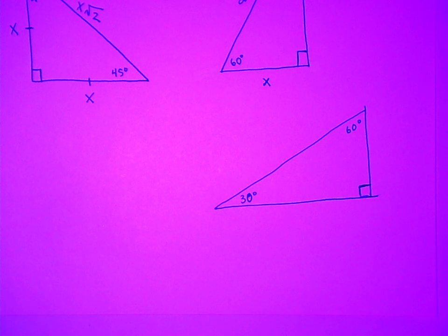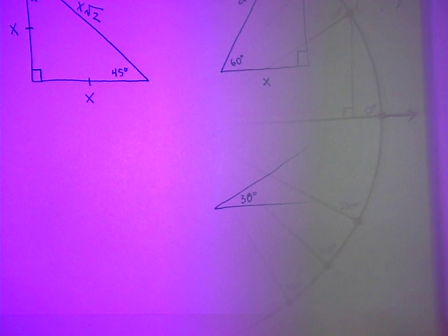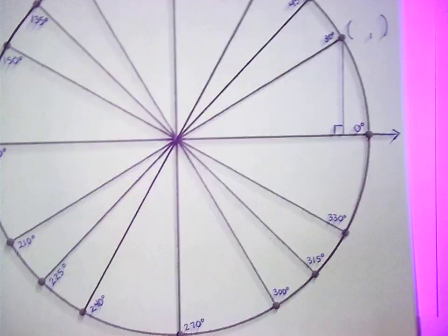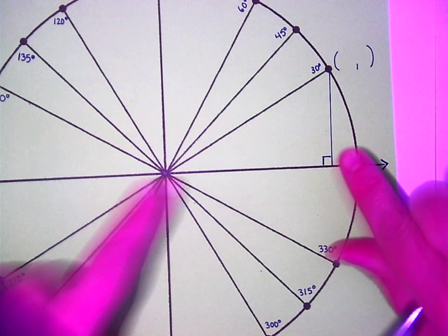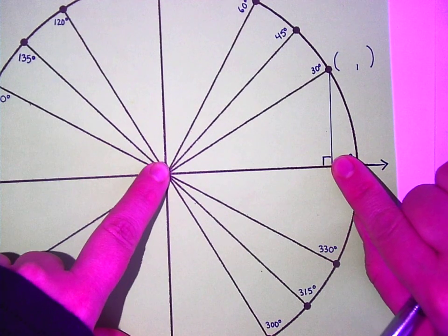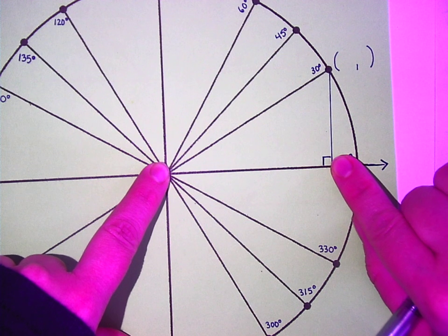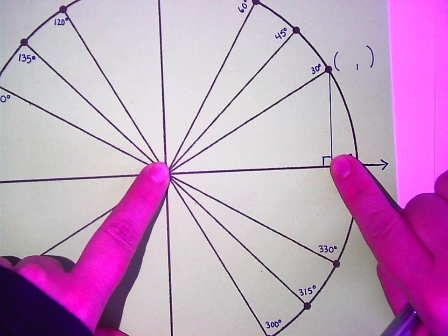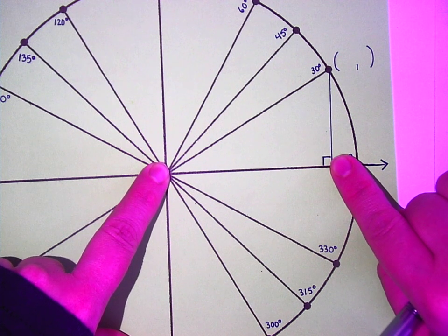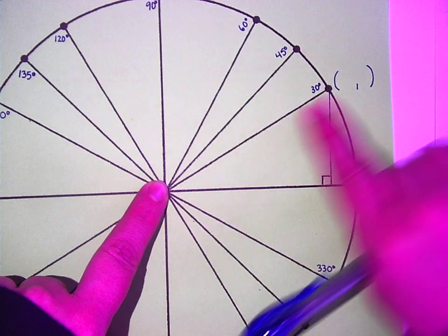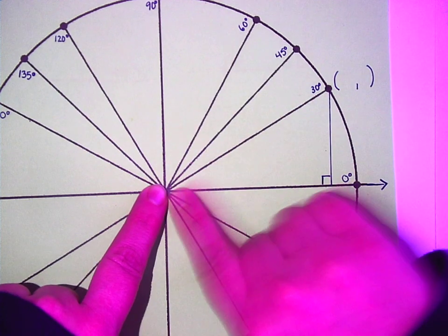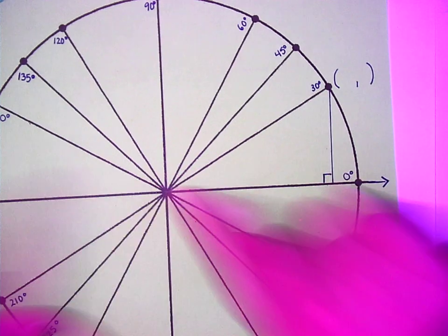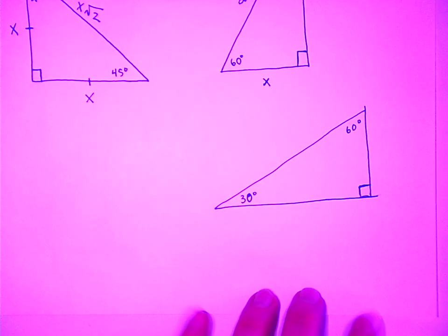Do we know any sides of this triangle? Yes. No, the bottom is not one. It is a unit circle, though, so something is one. Yeah? The hypotenuse, because that's the radius. Does everybody see that the radius is one on a unit circle? So on this triangle, the hypotenuse is one.